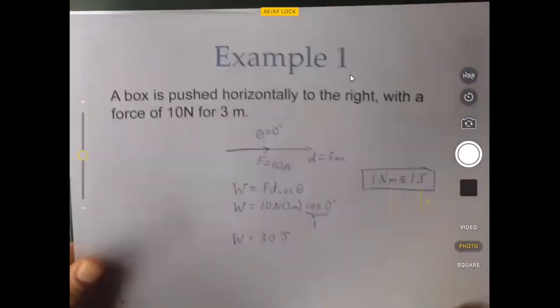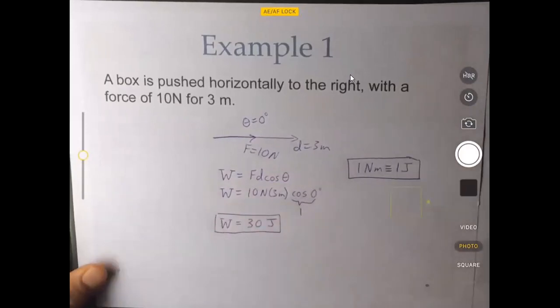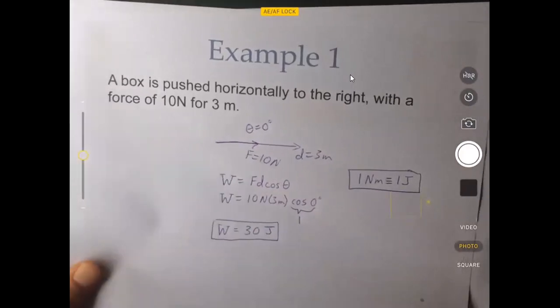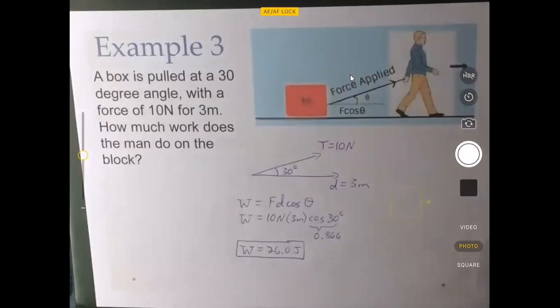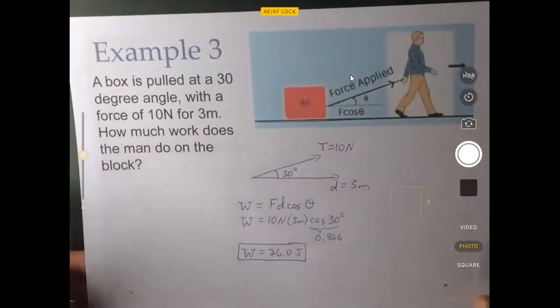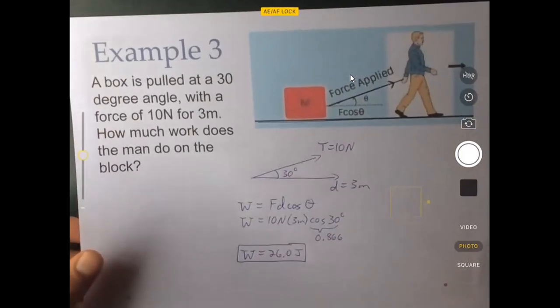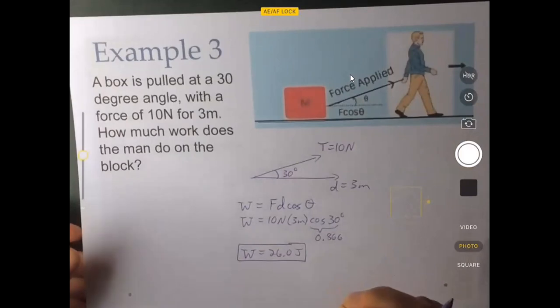So you can see the work done in this case was less than in example one. In example one, the work came out to 30 joules, even though the force and the displacement were the same. Here the work done is less because the force is less.